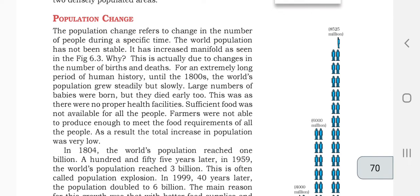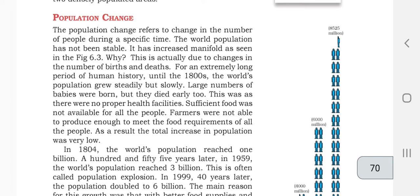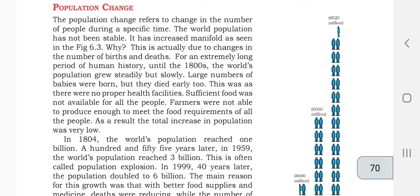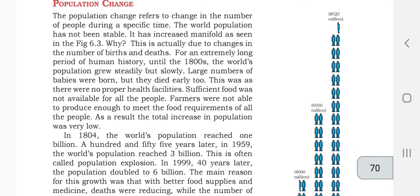For an extremely long period of human history until the 1800s, the world's population grew steadily but slowly. In 1800, the world population was growing in a slow and steady manner. A large number of babies were born but they died very early. People used to give birth to a lot of babies, but babies were also dying early. There was a balance in population growth. This happened because there were no proper health facilities — no hospitals, medicines.